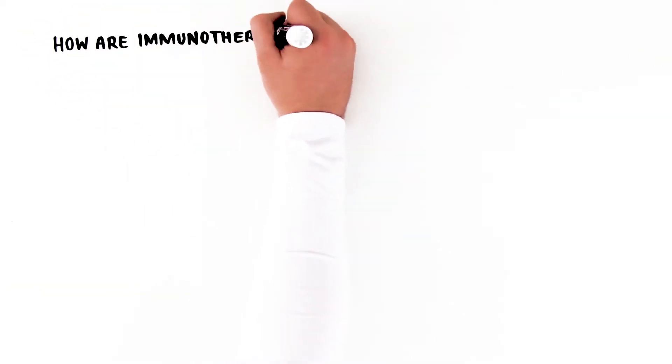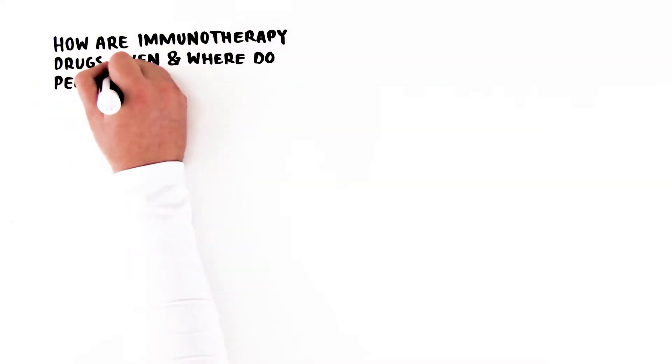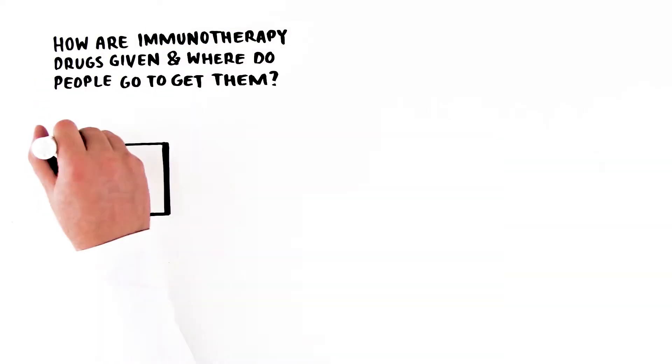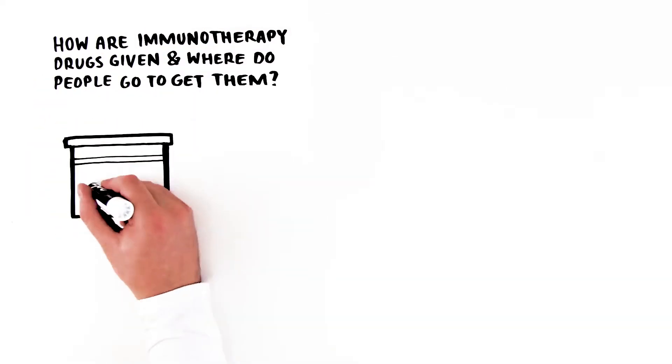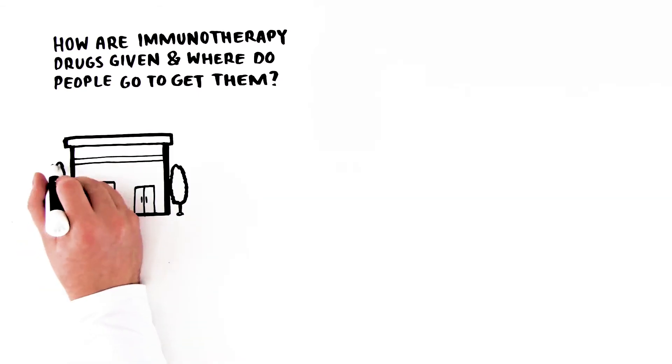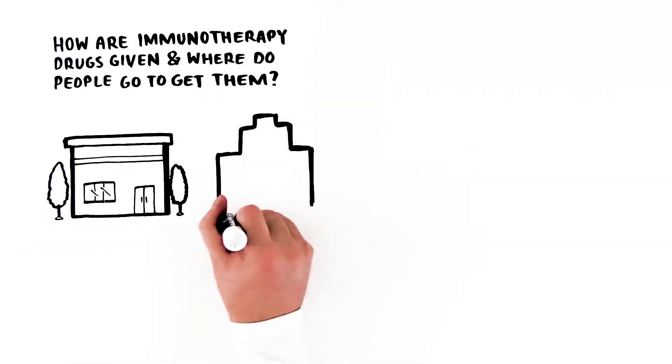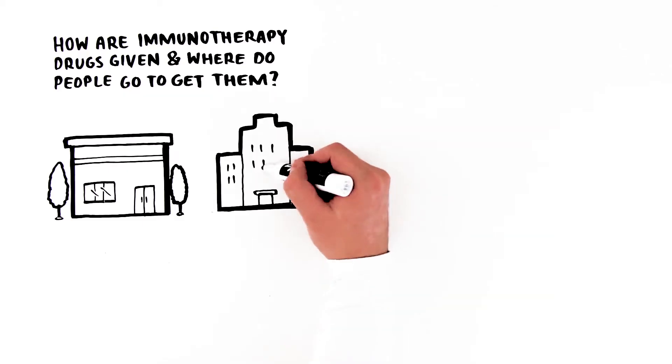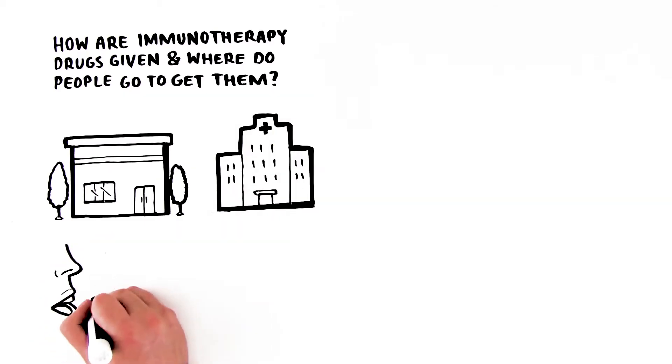How are immunotherapy drugs given, and where do people go to get them? Many are given at an outpatient clinic through an IV line as an injection or infusion. Some newer immunotherapy treatments may require a hospital stay. Others are given by mouth as a pill or capsule and can be taken at home.